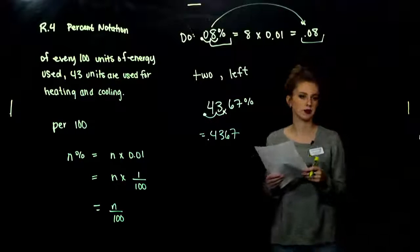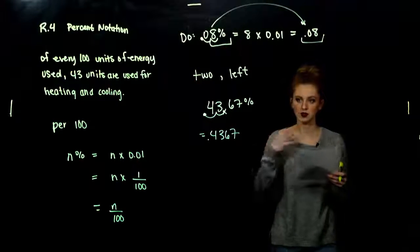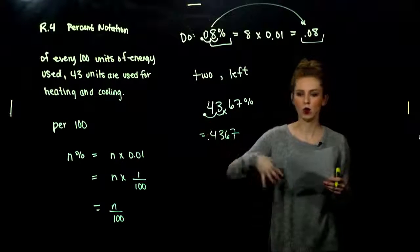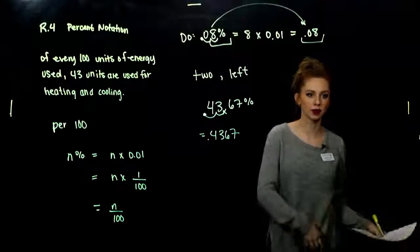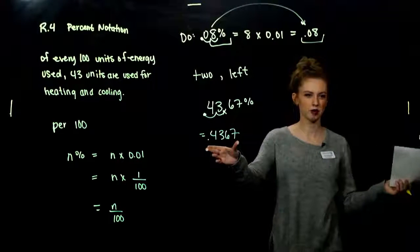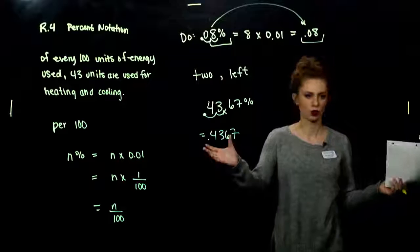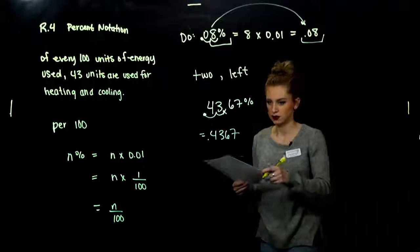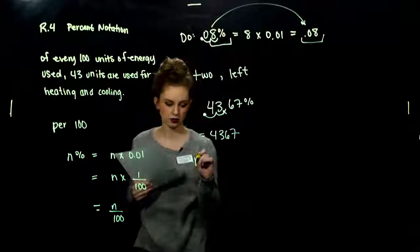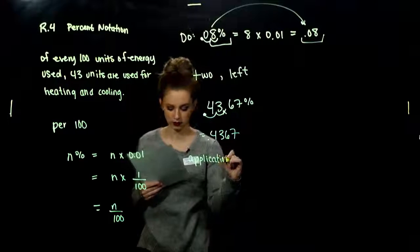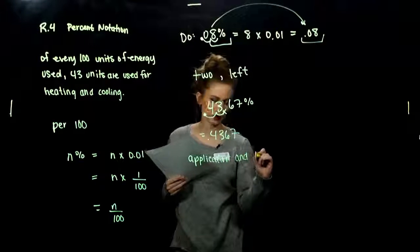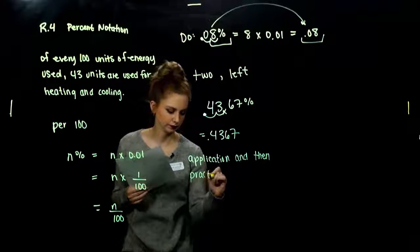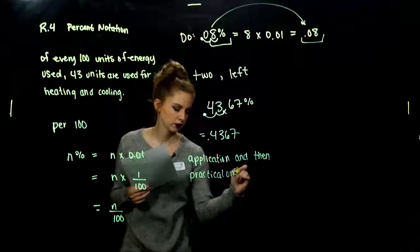Why do we have to be able to convert between the two? One reason is for application — if I'm figuring out a percentage or what percent of some number is another number, I need it in decimal form. But when you go to your boss and report your quarterly numbers, you talk in terms of percentage because it's the language we're used to hearing. There's a difference between application, where I need it as a decimal, and practical understanding, where I want to talk in terms of percentages.